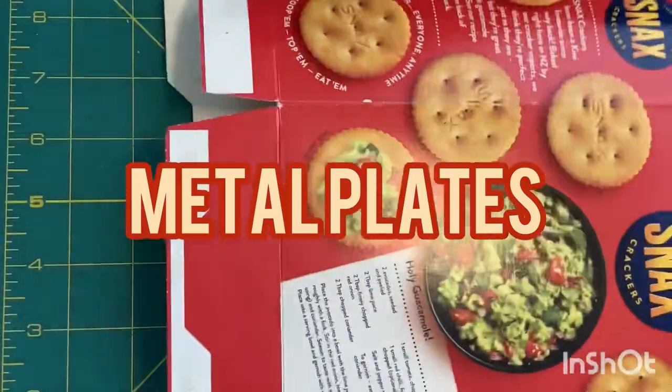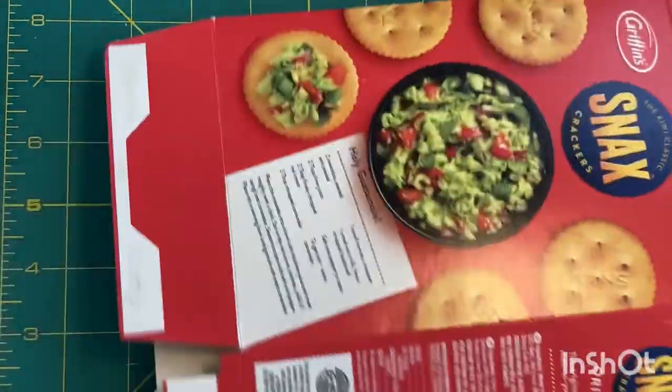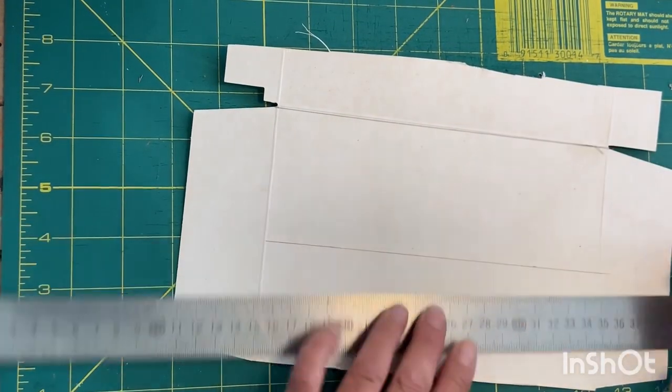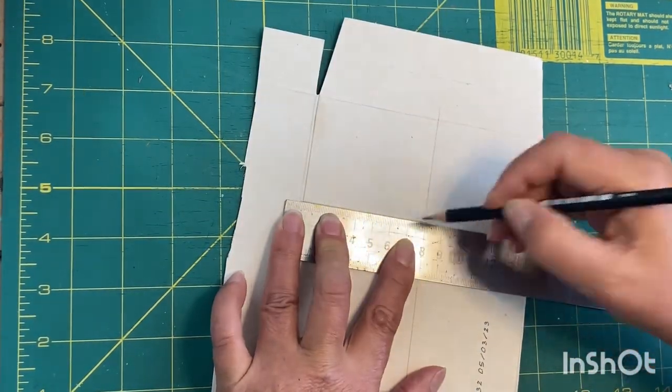Starting with making the metal plates, I'm using cracker boxes, PVA glue, a hole punch, sticker gems, and some of the plastic packing tape that holds boxes together.